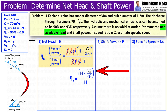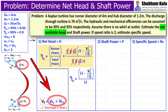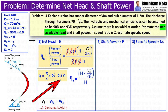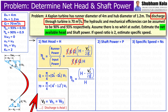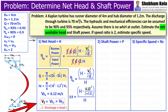For a Kaplan turbine, the absolute velocity of water at the outlet of the runner, denoted as V2, is equal to the velocity of flow at inlet and outlet. V_f2 can be calculated from the discharge formula, where discharge is given as 70 cubic meters per second. So we get V_f2 equal to 6.12 meters per second, which is equal to V2.